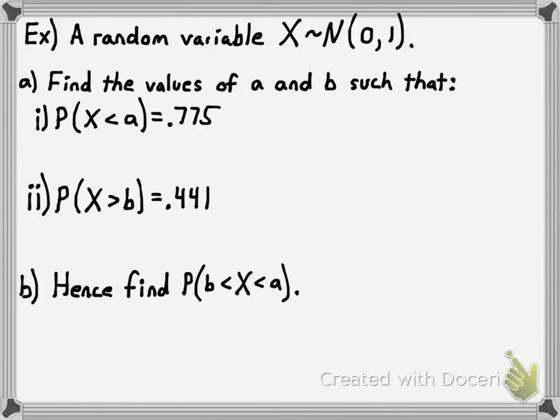That new calculator command is called inverse normal — I-N-V-N-O-R-M. Let's put this problem into perspective by drawing a picture. These pictures are invaluable, and if you use them you're going to have great success. We're saying that the probability of a random variable x being less than a number a is .775. Since more than half the data values are less than this number, it means a is greater than the mean, so it's somewhere over here on the curve.